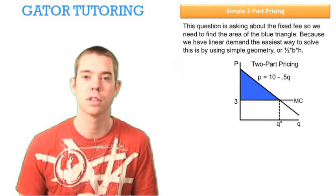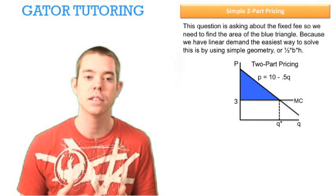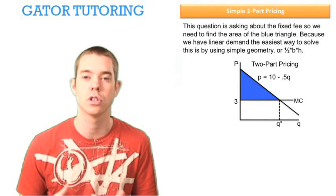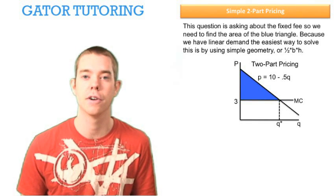This question is asking specifically about the fixed fee, so we need to find the area of the blue triangle. Because we have linear demand, the easiest way to solve this is by using simple geometry, which says 1 half base times height will give us the area of that triangle.